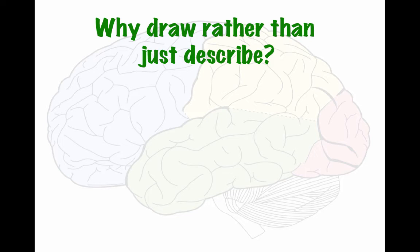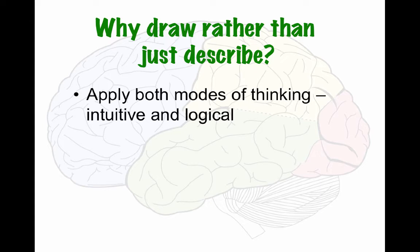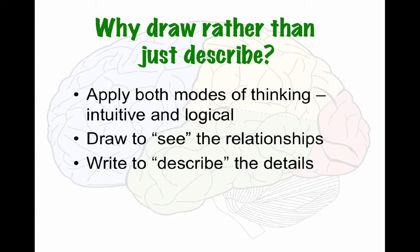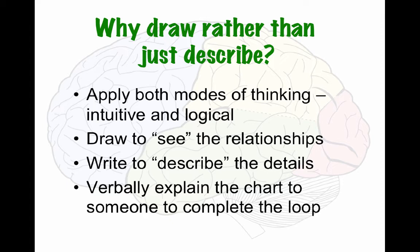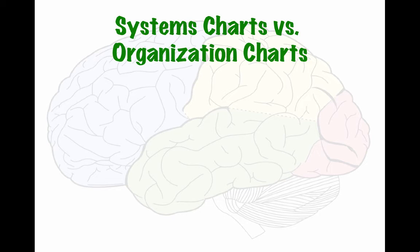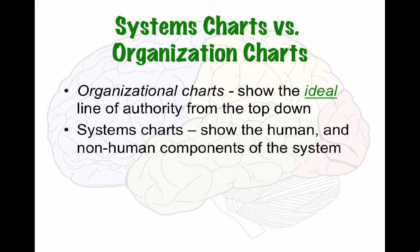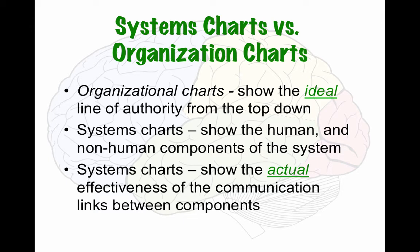Why should we draw a system rather than just describe it? This is so we can apply both modes of thinking — both intuitive and logical. We draw to see the relationships between the components, we write to describe the details of those relationships and make suggestions as to what might be working or not working, and then it's good to verbally explain the chart to someone to complete the loop. System charts are different from organizational charts: organizational charts show the ideal line of authority from the top down, whereas systems charts show the human and non-human components and the actual effectiveness of communication and links between components.